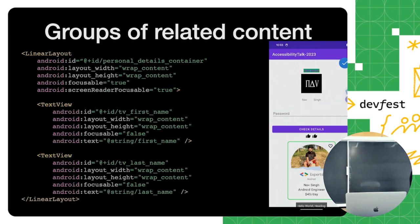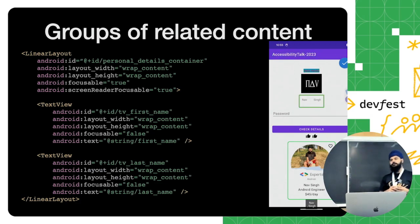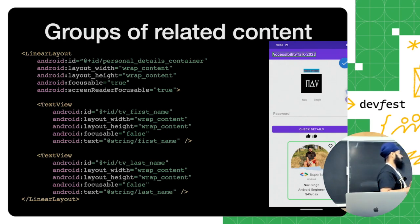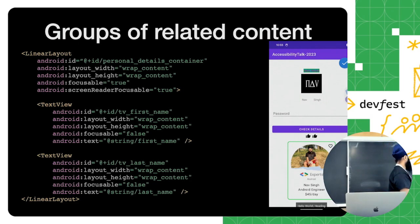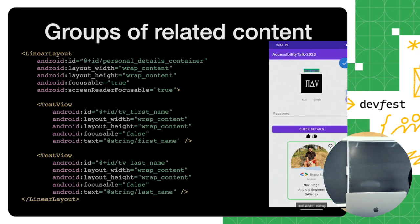This is an example of grouping content. Most applications have some components on screen, like person or contact details. If we don't group the information, TalkBack processes each and every single component, which sometimes doesn't make sense. To group multiple components together, you can set `focusable` and `screenReaderFocusable` on the parent view — in this case a LinearLayout. Inside I have two TextViews with first name and last name, and on screen it's selected as a single component, so TalkBack speaks them together as 'Nav Singh.'